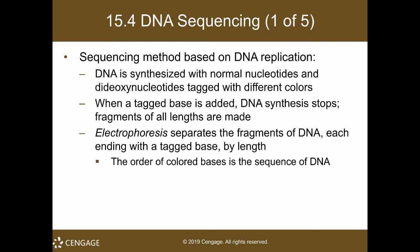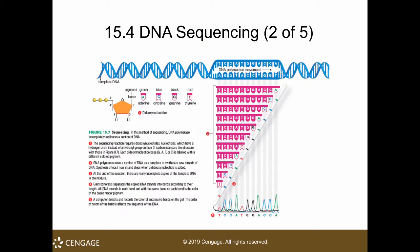Each base is tagged with a different color. Then they run it with electrophoresis to separate the fragments by size. In your PCR mixture, you have your DNA to sequence, your polymerase, your ordinary nucleotides, and a small amount of the specialized dideoxynucleotides — the ones that stop the elongation step when added.